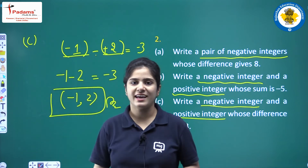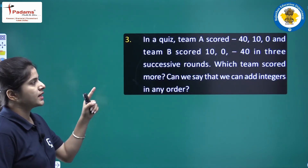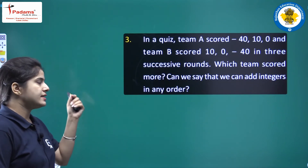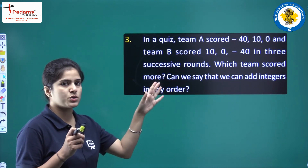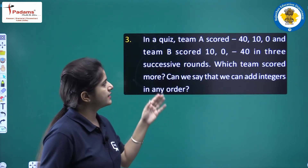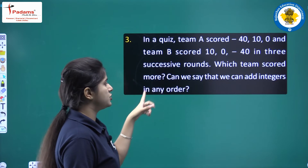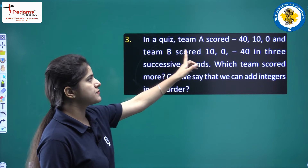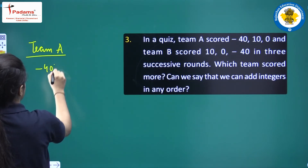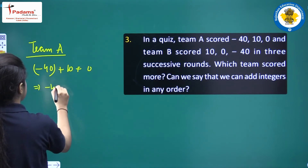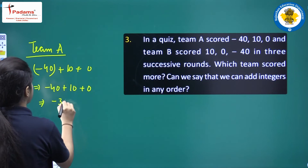Question 3: in a quiz, team A scored minus 40, 10, and 0, and team B scored 10, 0, and minus 40 in three successive rounds. The scores are the same but reshuffled. Which team scored more? Let's find team A's total: minus 40 plus 10 plus 0 equals minus 30.